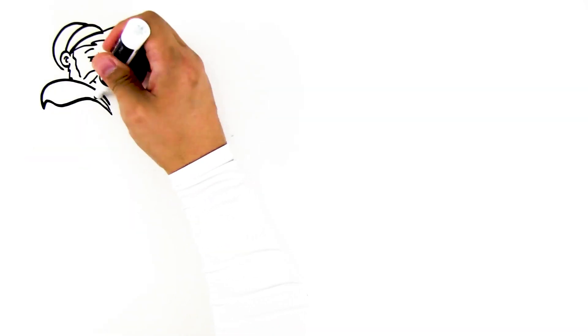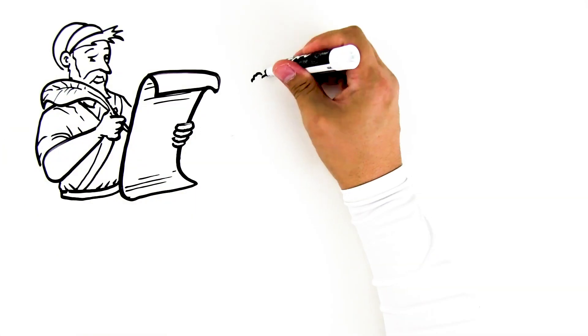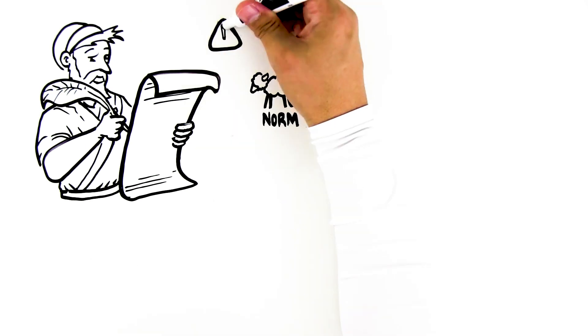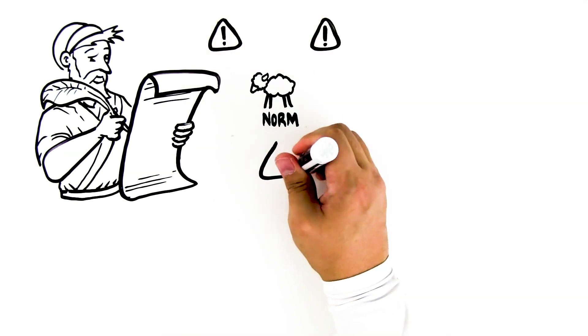Instead of writing new rules for each unusual sheep, what if the shepherd could simply explain what their normal sheep look like, then be alerted on anything abnormal?